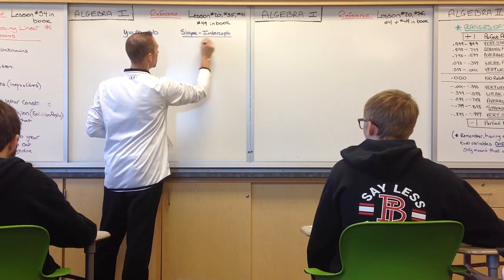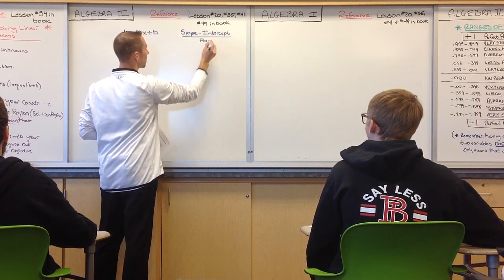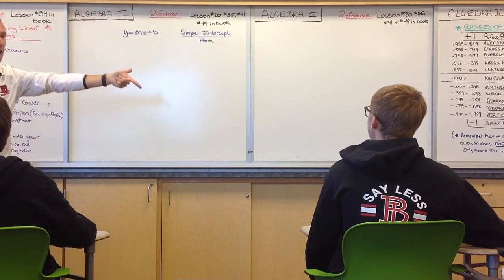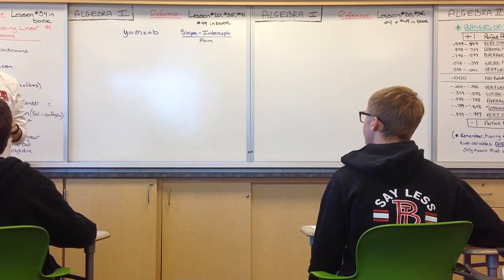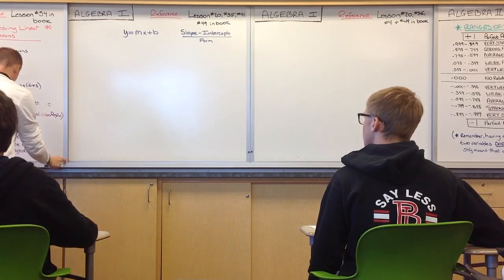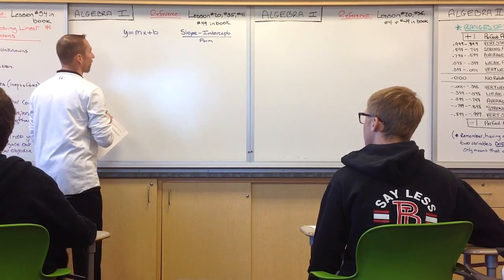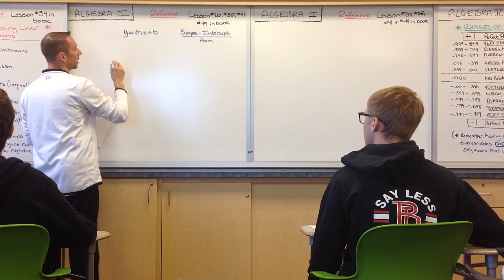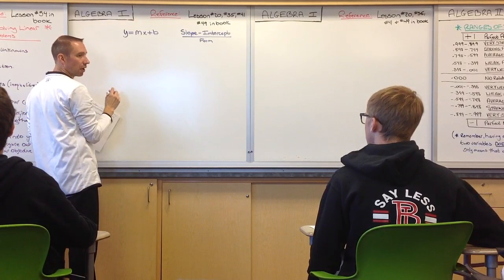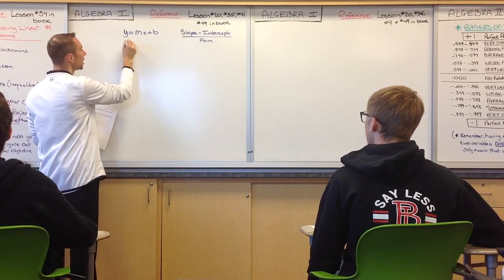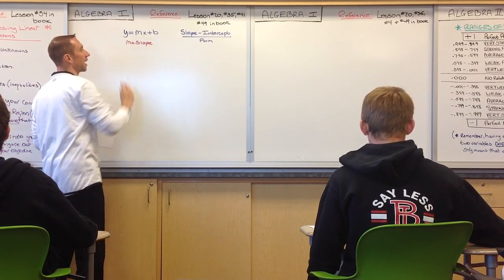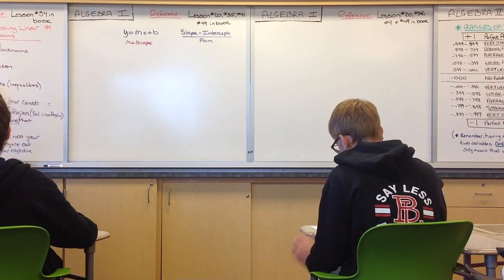They call it slope intercept form because if it's in this form, we know the slope and we know the y-intercept of this particular equation or graph. So when looking at this generic formula, what is my slope here? What letter does it deal with? The m — the number that is in front of my x variable — is considered my slope.